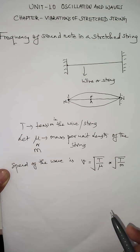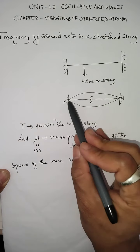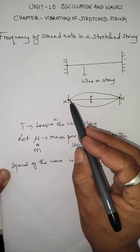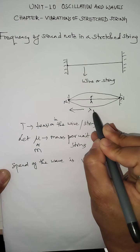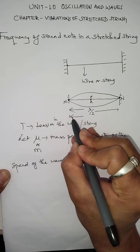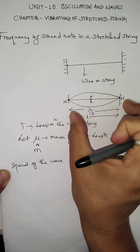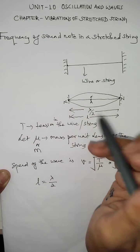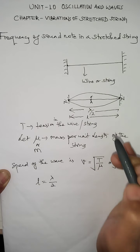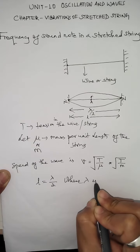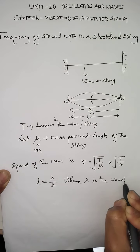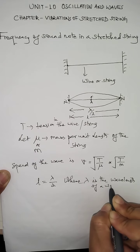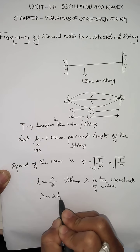With this speed we can write the frequency of vibration of the string. But to calculate the frequency, we first need to calculate the wavelength. Looking at the diagram, there are two nodes formed at the two ends of the string at the rigid supports. The distance between two nodes is λ/2, and the length L of the string equals that distance. So L = λ/2, which gives us wavelength λ = 2L.